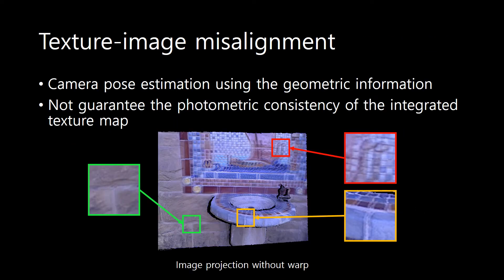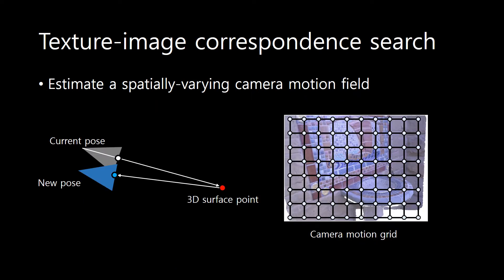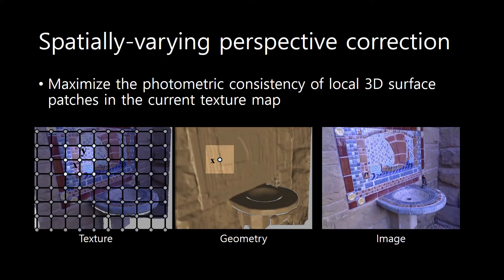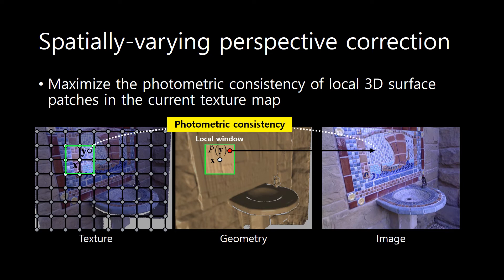Here, we estimate the camera pose of the current frame using the geometric information of the current depth map with respect to the accumulated geometry. Due to asynchronous capture of color and depth information and inaccurate geometry, back projection of the current color image and the texture is not aligned. To mitigate the mismatch between the current color image and the texture map, we estimate the spatially varying camera motion field of the current frame.